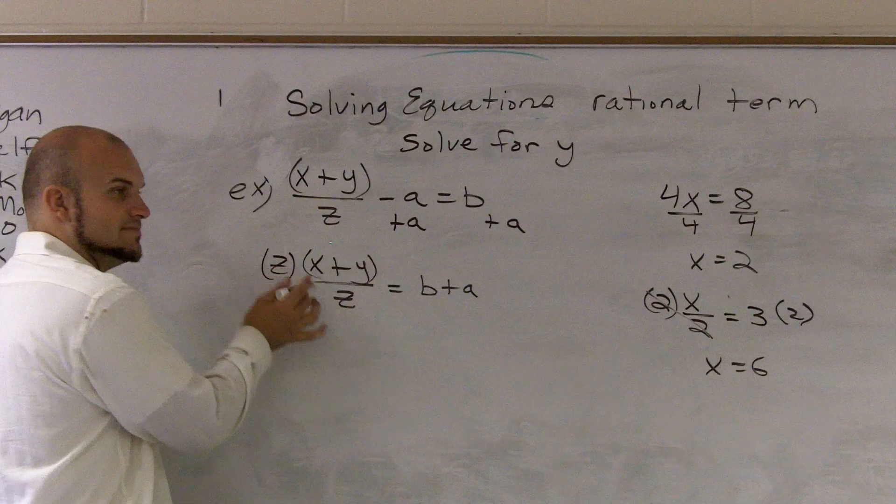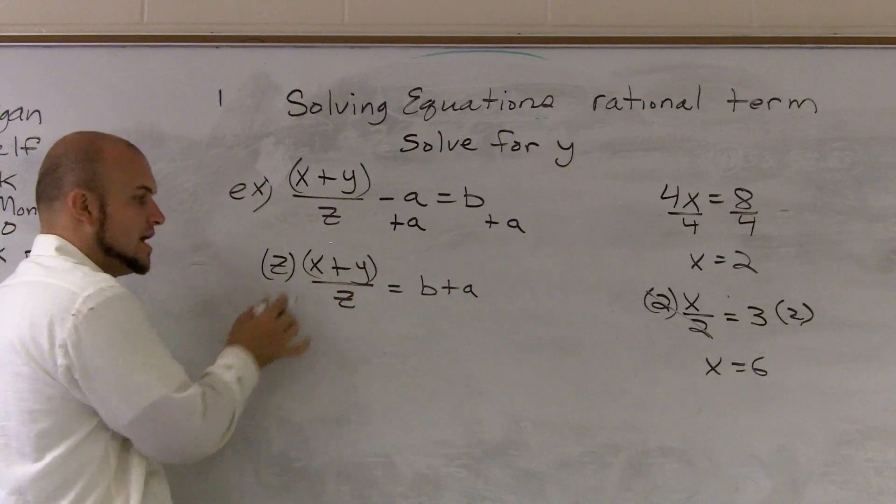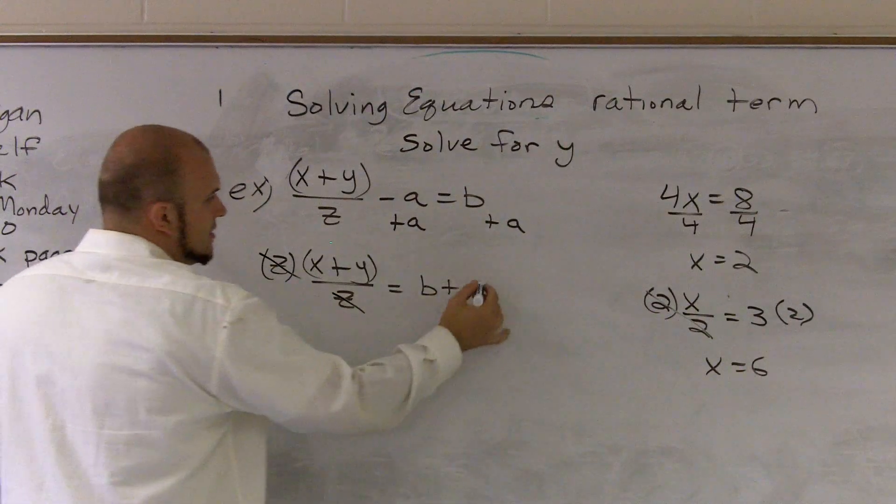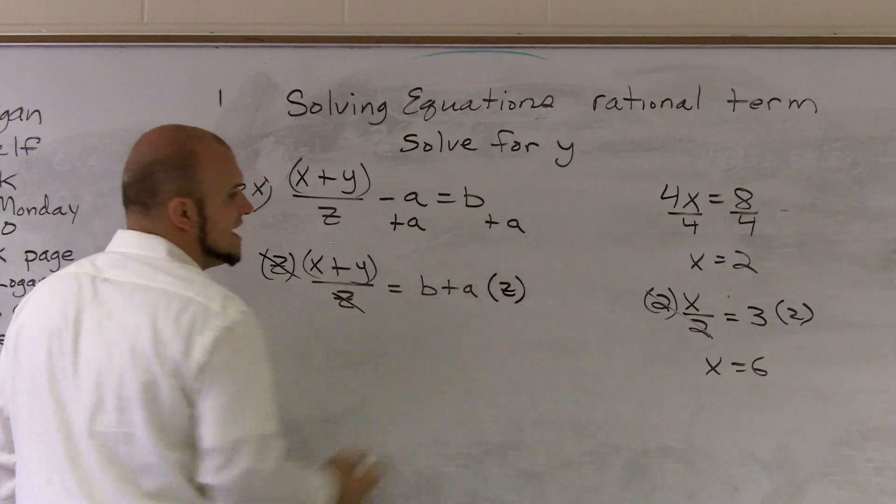So anyways, it doesn't matter because my z's are actually going to cancel out at z divided by z, which will equal 1. So we call them cancel out. So I multiply the z on both sides.